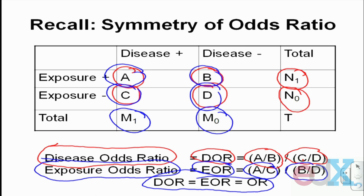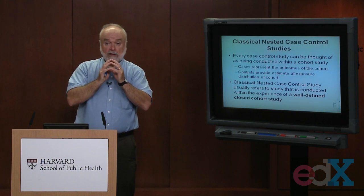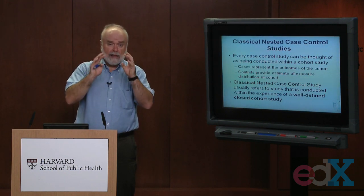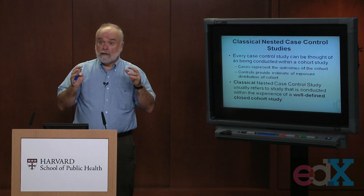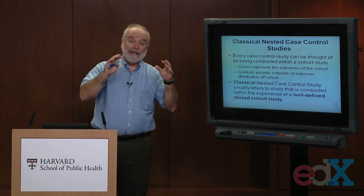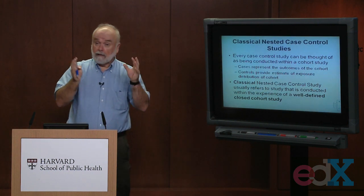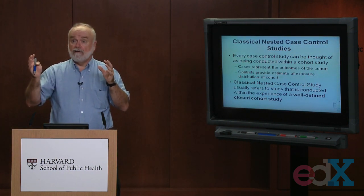Now for case control studies — in case control studies we're taking cases who already have disease and asking about their previous exposures, measuring exposure odds. We take controls reflecting the population from which cases came and ask about their previous exposures, measuring exposure odds. So in case control studies we measure exposure odds ratios, and I'll be linking them to what would happen in the underlying cohort study.